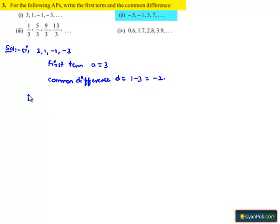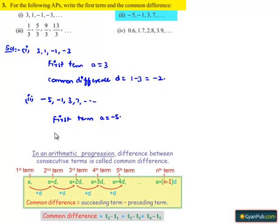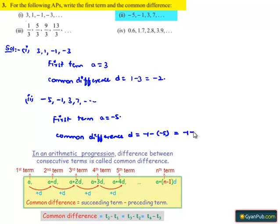Now for the second bit, the series is given as minus 5, minus 1, 3, 7, and so on. Here the first term A is equal to minus 5. And the common difference D is given by either second term minus first term or the third term minus second term. Here, D is equal to minus 1 minus of minus 5, that is nothing but minus 1 plus 5, that is equal to 4.